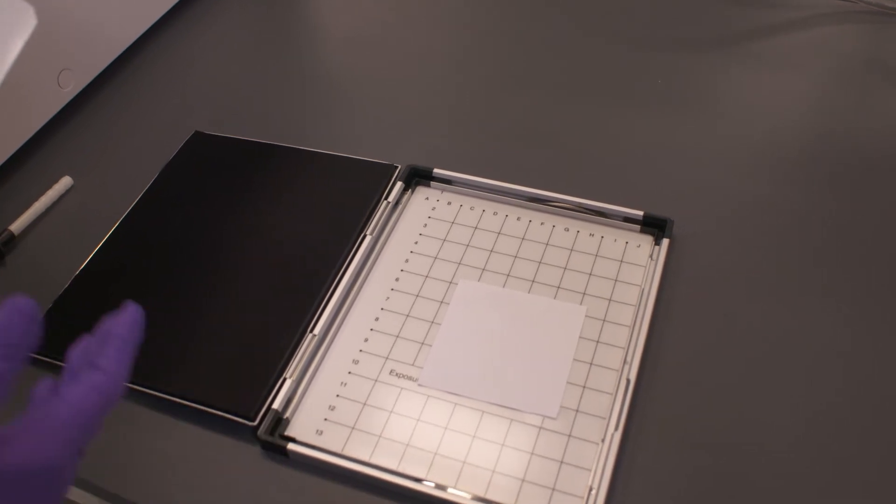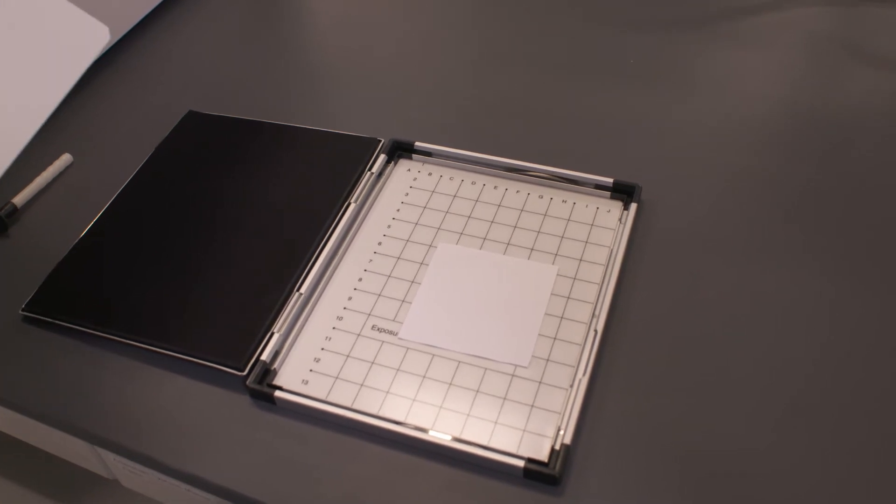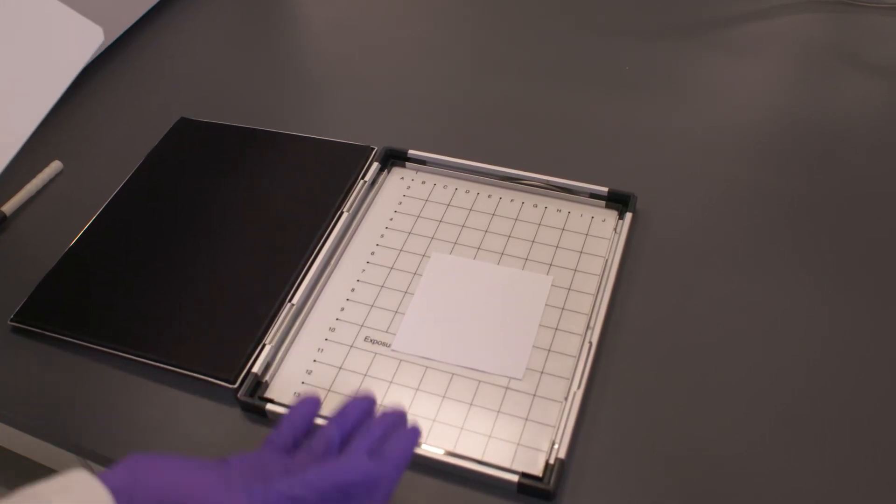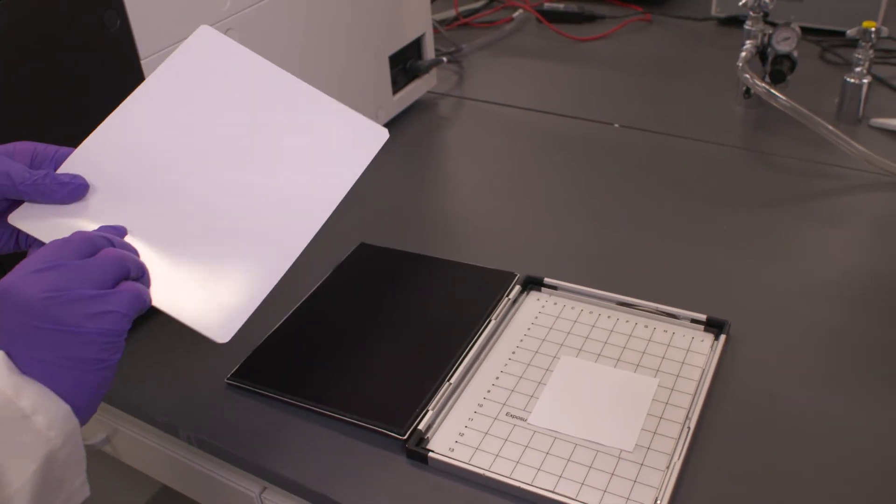If it was a wet gel, obviously you want to have that protected with something like saran wrap or a Mylar sheet to prevent contamination of the screen. And because you have the radioactivity down here, the storage phosphor screen needs to have the uppermost side in contact with the sample.